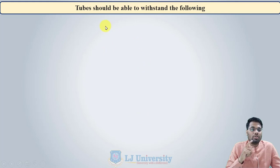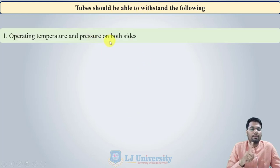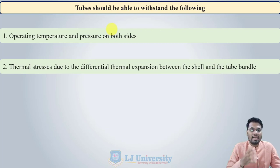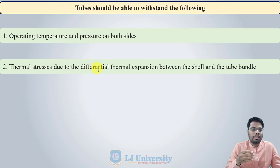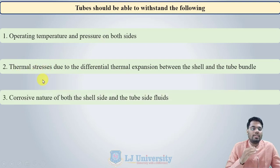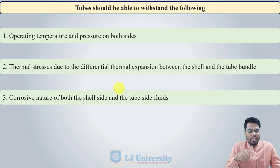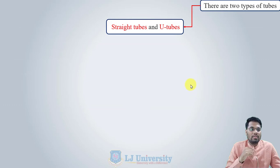The tube must be able to withstand: first, operating temperature and pressure on both sides — inside and outside — since shell side fluid flows over the outer surface and another fluid flows inside the tube; second, thermal stress due to differential thermal expansion between the shell and tube bundles from large temperature differences; and third, the corrosive nature of both shell side and tube side fluids, since one fluid contacts the outer surface and the other contacts the inner surface.